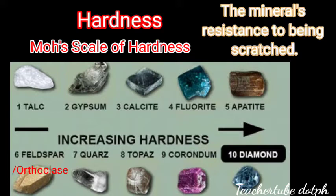Hardness refers to the mineral's resistance to being scratched. The harder ones are difficult to scratch; the softer ones are less resistant to scratches. Friedrich Mohs, a German mineralogist, prepared a scale of hardness numbered 1 through 10 in increasing hardness.